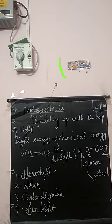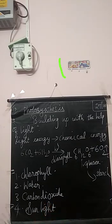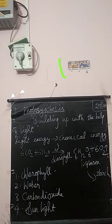That starch is stored in the plant body. The things needed for photosynthesis are: first, the plant must have the chlorophyll pigment; then it needs water, carbon dioxide, and sunlight. These are the certain things — the accessories required for photosynthesis.